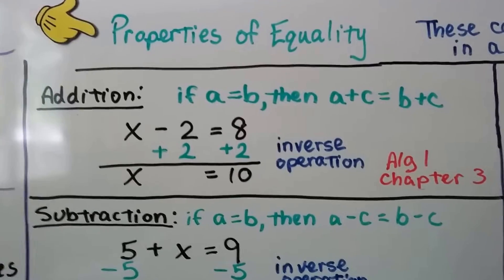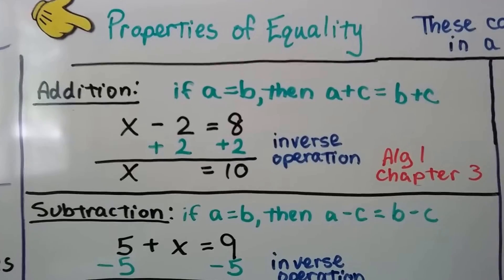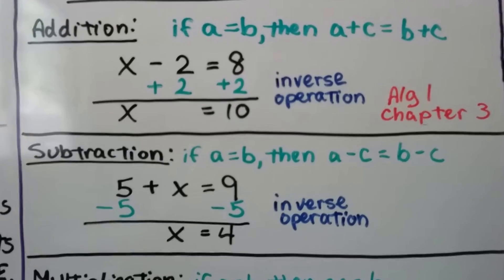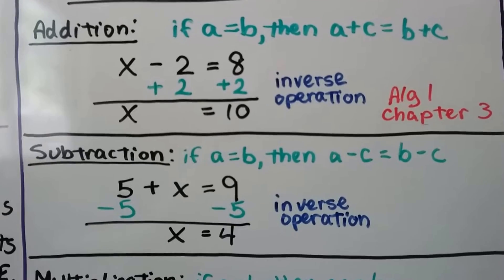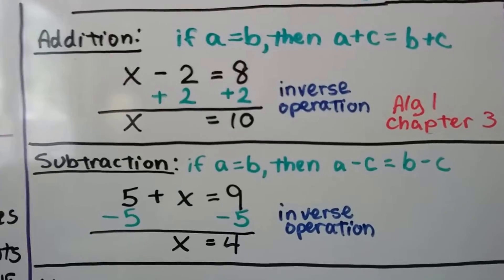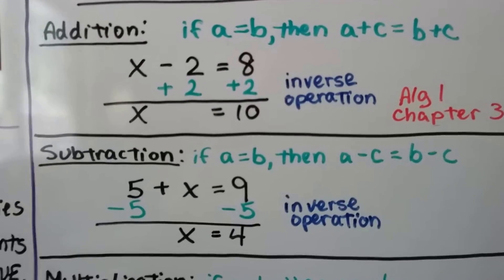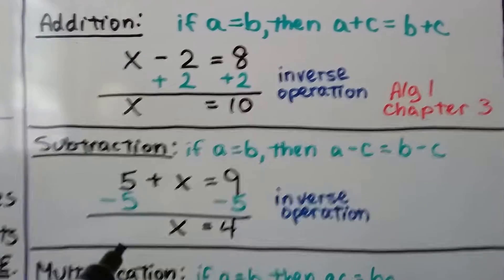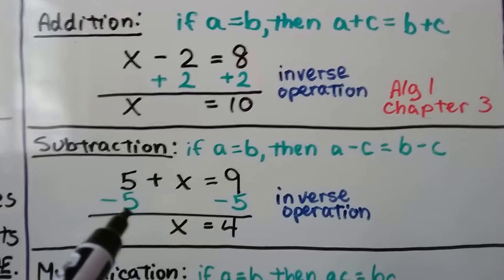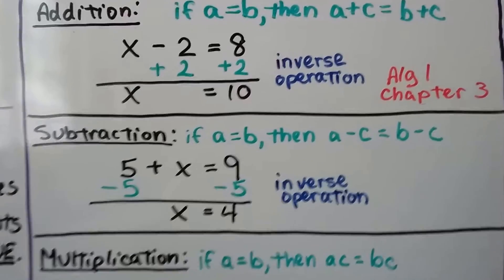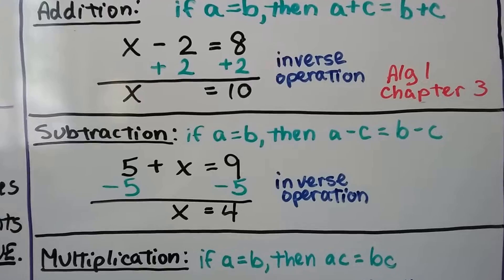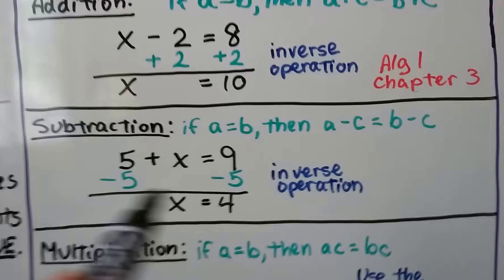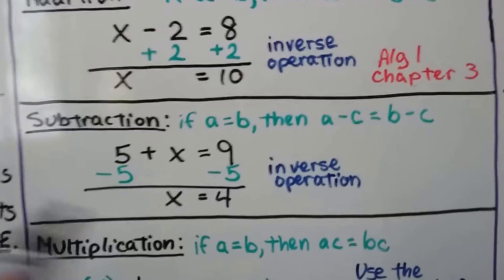We're just using an inverse operation. If you don't remember how to do that, it was covered in Algebra 1 Chapter 3, linked in the description. The subtraction property of equality says if A equals B, then A minus C equals B minus C. For example, if we have 5 plus X equals 9, we subtract 5 from each side, creating a zero pair, and we're left with X equals 4.